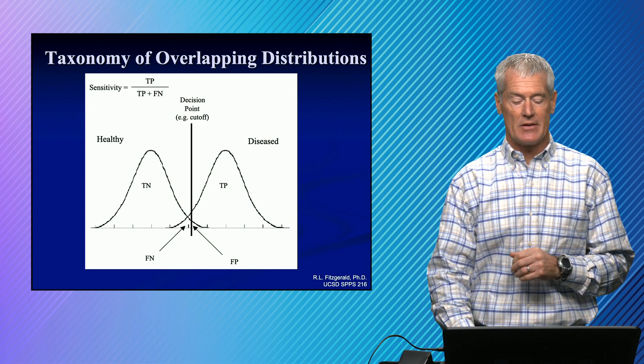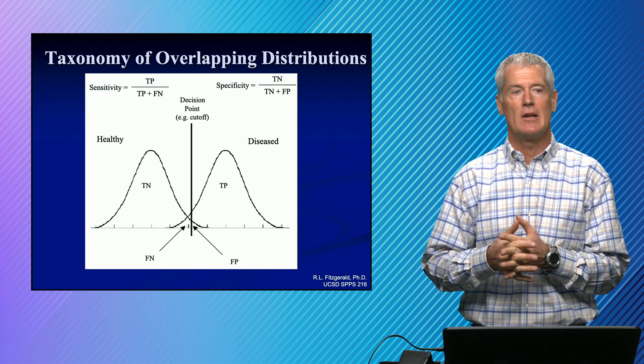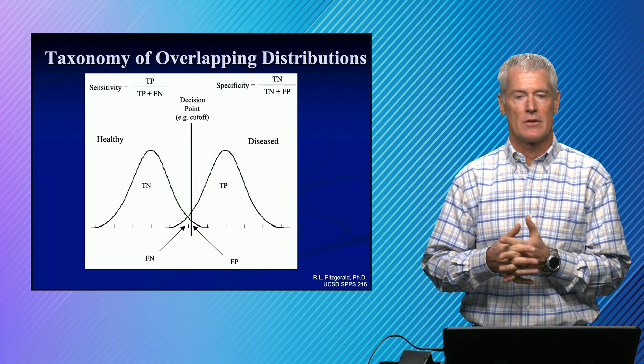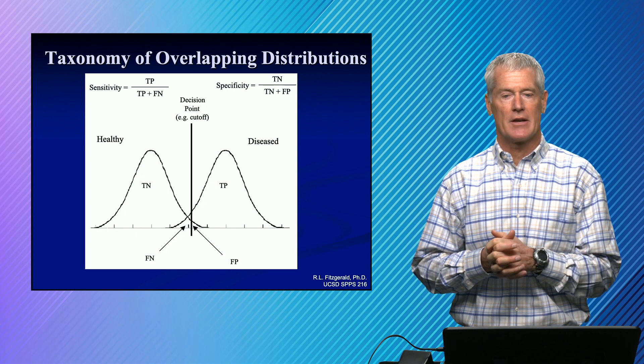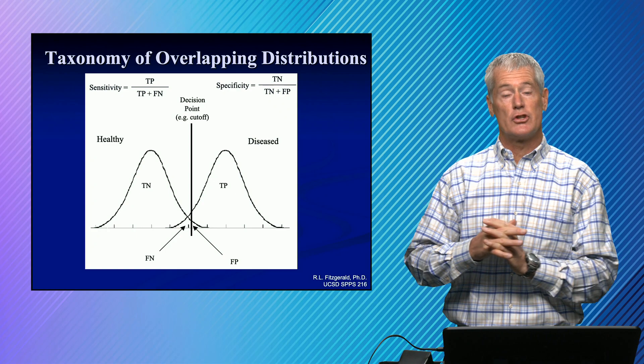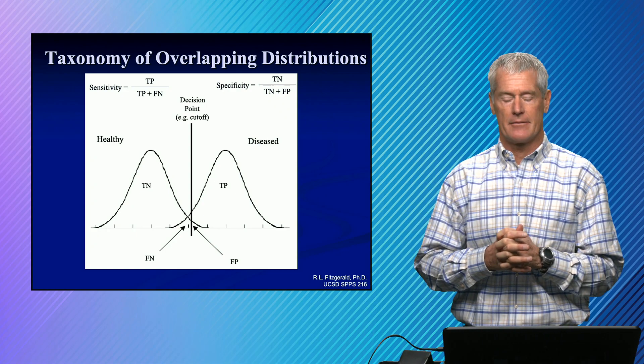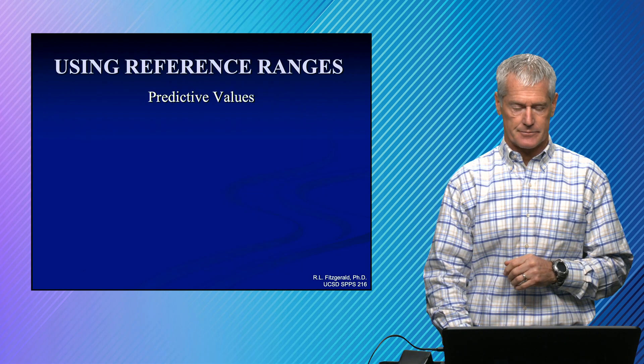We talk about sensitivity and specificity. And again, those are characteristics of the test and they're independent of the prevalence of the disease. So a sensitive test is the ability to pick up true positives over all that should be positive. Specificity is true negatives over all that should be negative.